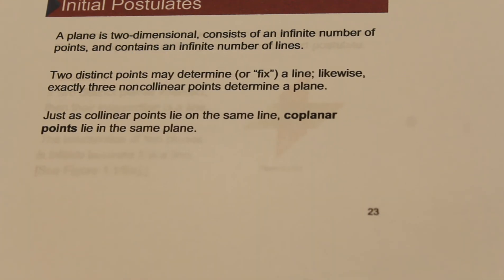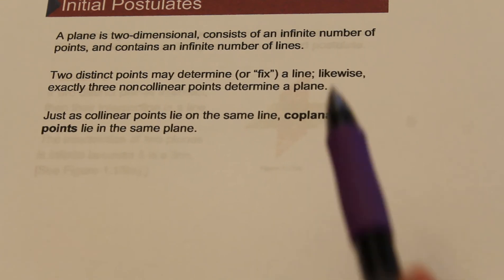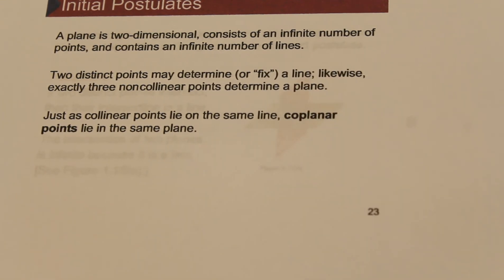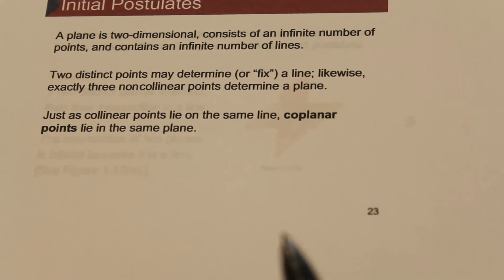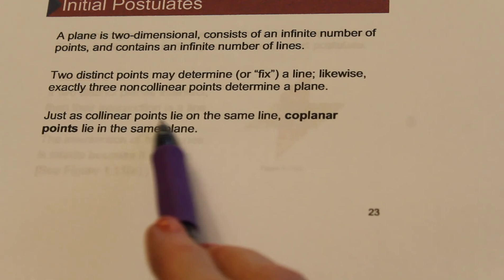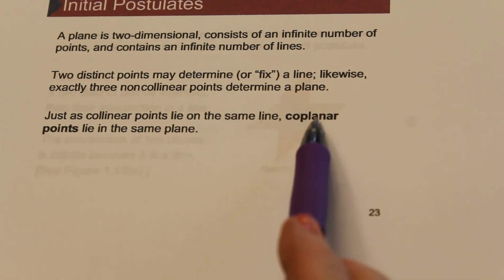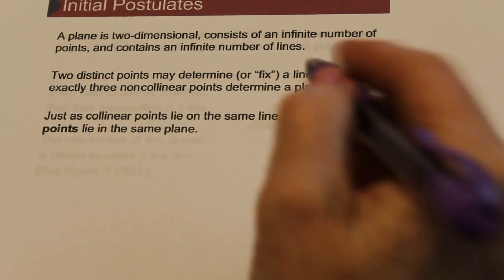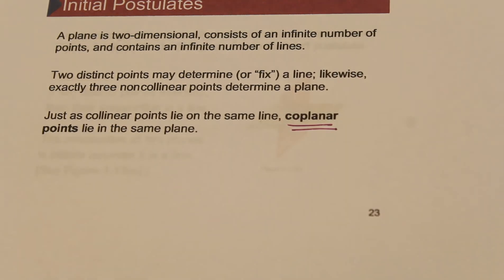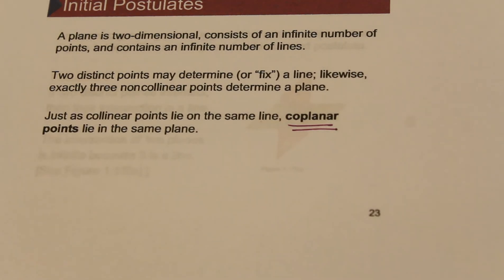So a plane is a two-dimensional object. It has an infinite number of points and it contains an infinite number of lines, and two points will define a plane. So just as collinear points are on the same line, coplanar points are on the same plane. So here's our new phrase: coplanar. They're on the same plane, they'd be on the same piece of paper.